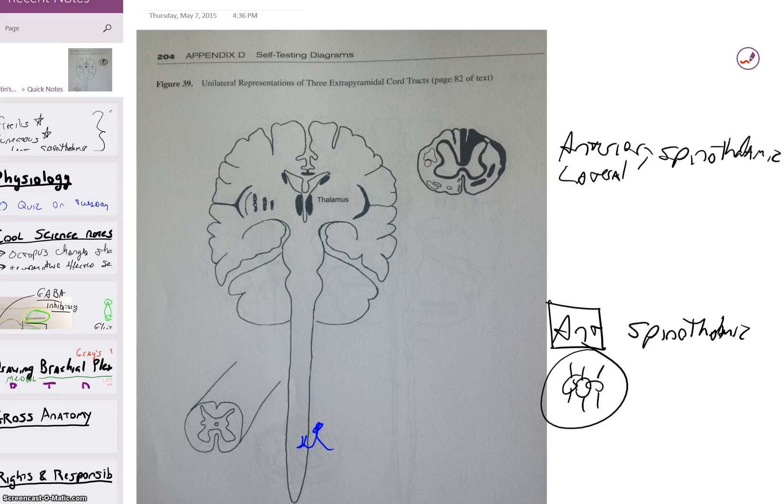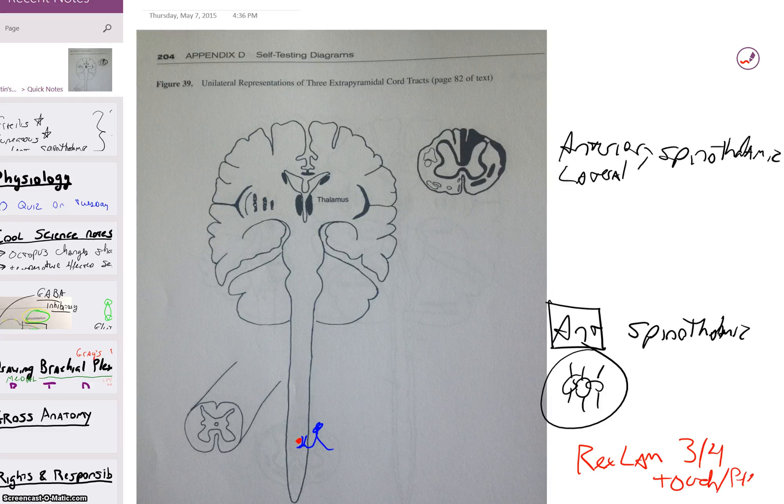So it comes in the anterior spinothalamic, and there's a synapse right away. Now, if you look back into page 64 of your little book, you'll see that Rexed lamina 3 and 4 deal with touch and pressure. So that's why they synapse together. Rexed lamina is this little garage that deals with touch and pressure, and the anterior spinothalamic also deals with that. So it makes sense that they associate together. We don't differentiate so far on 3 and 4, so it's just in Rexed lamina 3 and 4.